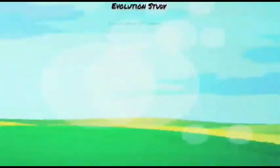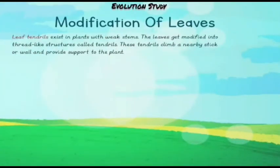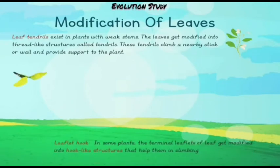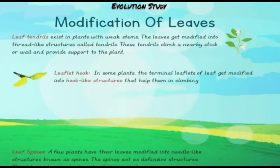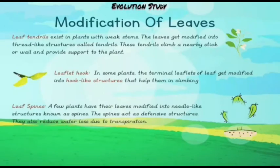Now let's talk about the modification of leaves. To modify means to change. Leaf tendrils exist in plants with weak stems — the leaves get modified into thread-like structures called tendrils. These tendrils climb a nearby stake or wall and provide support to the plant.